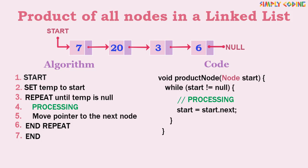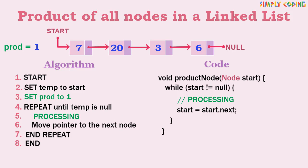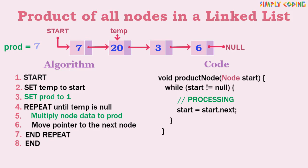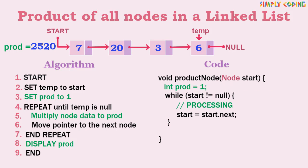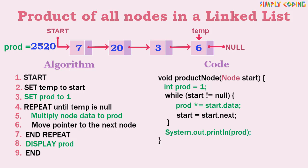The next program is to find the product of all nodes in a linked list. Before we start the traversal we initialize a product variable to one. Whenever we access a node we just multiply it to the product variable. The product variable is always initialized to one because if initialized to zero, anything multiplied by zero becomes zero. Once traversal is complete we display the product. In code, we initialize a variable prod to one and inside the while loop we multiply node data to prod.